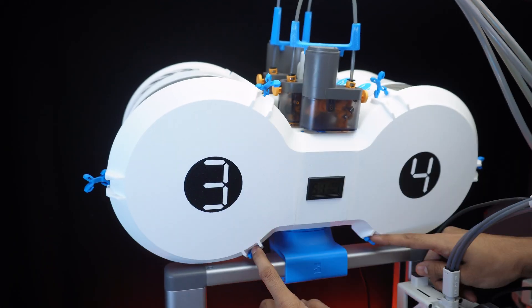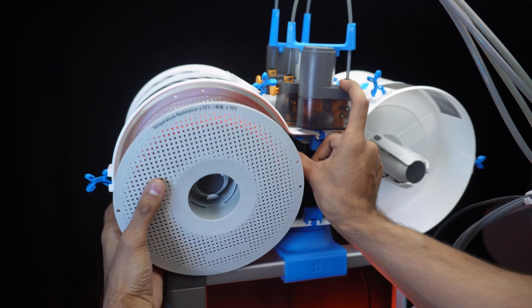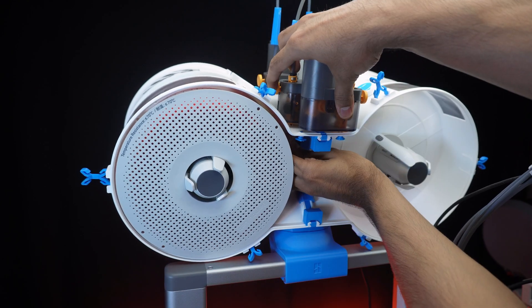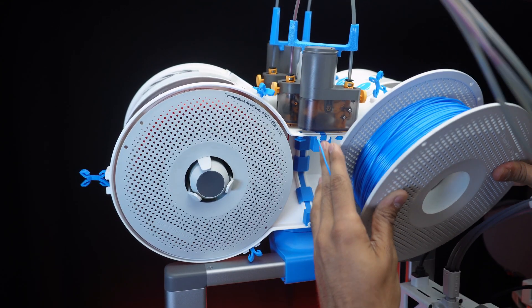With the enclosure mounted, let's load up the filaments. The enclosure keeps everything tidy and prevents tangling. We need to remove the silica buckets every time while loading and unloading the filament spools.